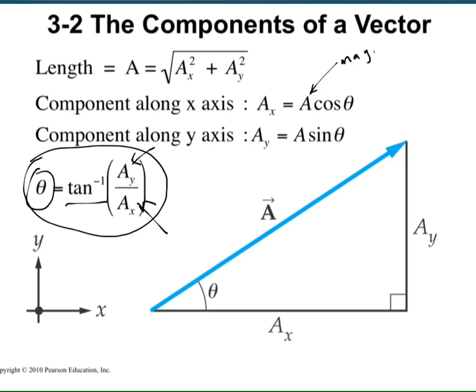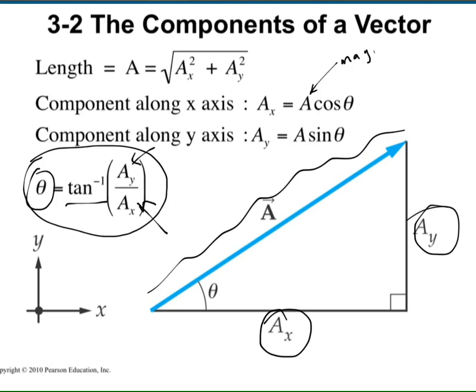How can you relate the length or magnitude of a vector to its components? If you know trigonometry and the right triangle, then it's very easy. The length is just the square root of the sum of the squares of the vertical and horizontal sides of the right triangle — that's the Pythagorean theorem. Also, if you know the hypotenuse, the y-component is just the length times sine of theta.